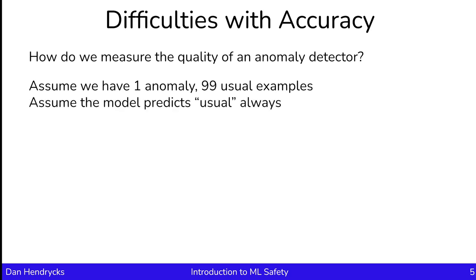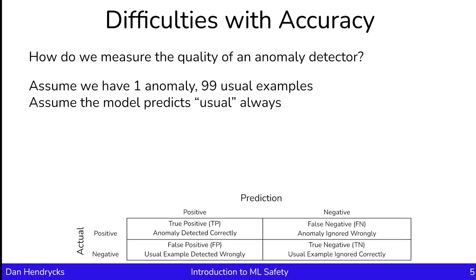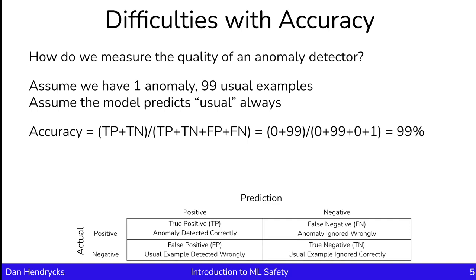Let's also assume that we have a model that predicts 'usual' always. So this model, irrespective of the input, is always predicting usual, even if the example is an anomaly. Let's analyze this model with a 2x2 matrix and abide by the convention that an anomaly is called a positive example. Then, a true positive is when an anomaly is detected correctly, and for this model there are no true positives. A false negative is if an anomaly is ignored wrongly, and in this case there is one false negative. A false positive is if a usual example is detected wrongly, and in this case there are no false positives. A true negative is when a usual example is ignored correctly, and in this case there are 99 true negatives. So the accuracy is 99%.